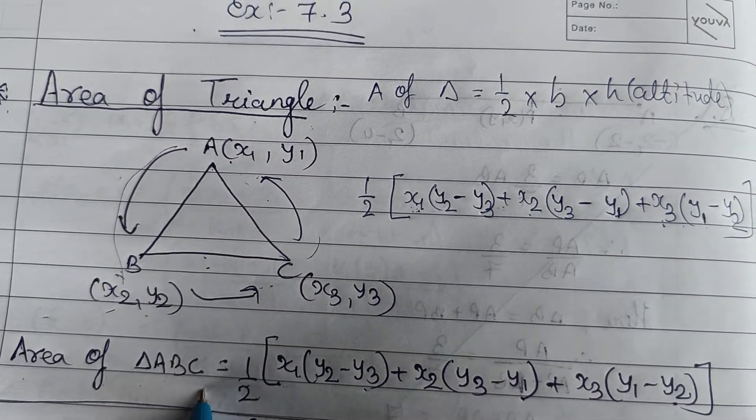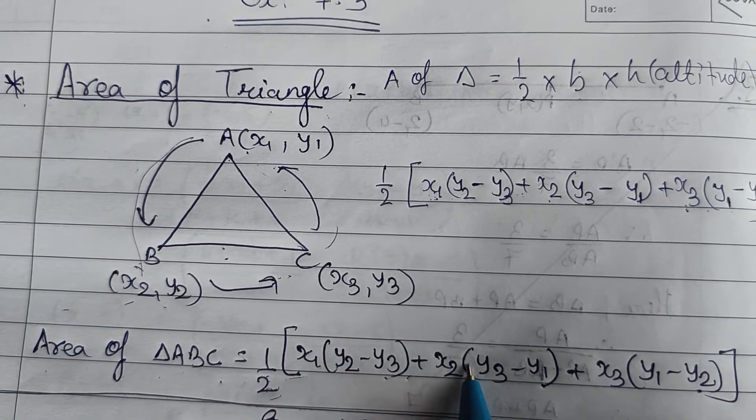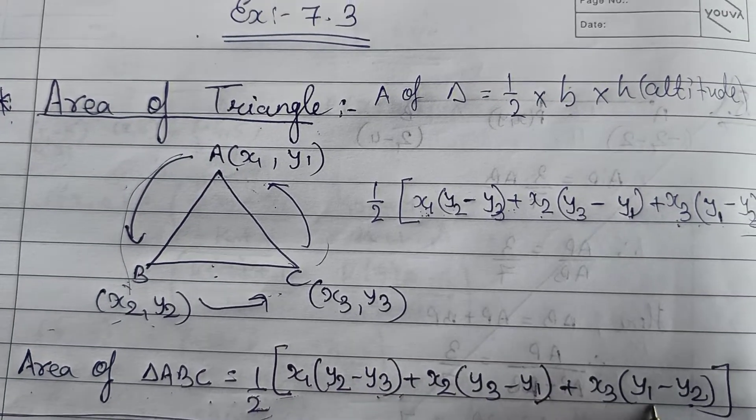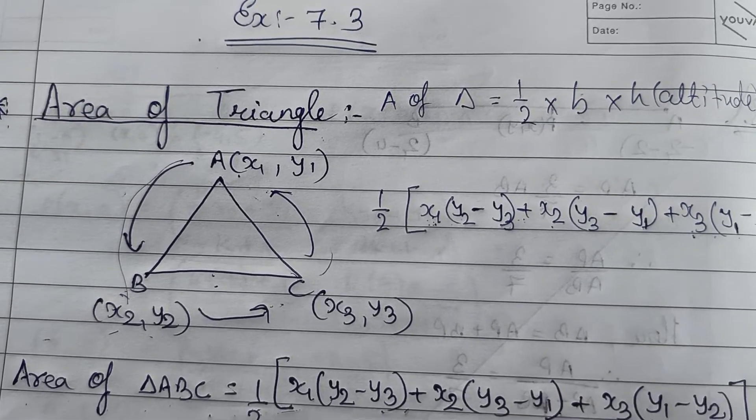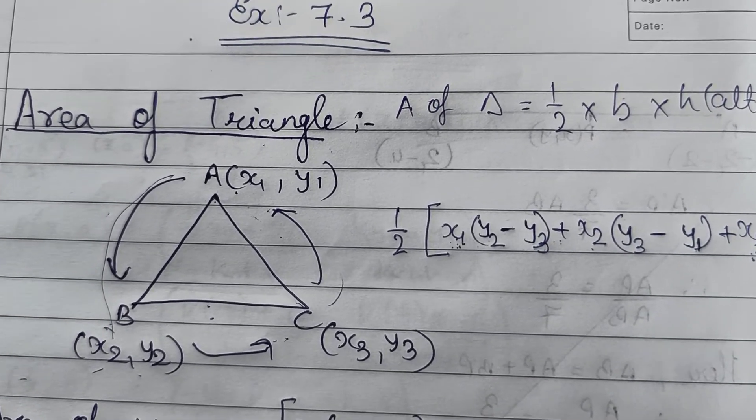Area of triangle ABC is half multiplied by x1 into y2 minus y3, plus x2 into y3 minus y1, plus x3 into y1 minus y2. Now come to exercise 7.3 of your textbook, that is on page number 170.